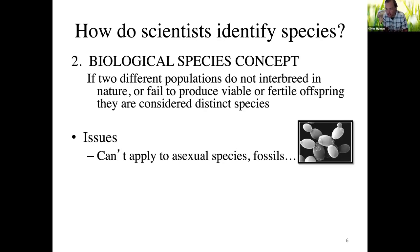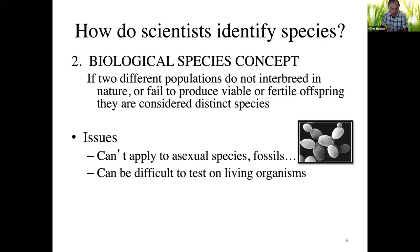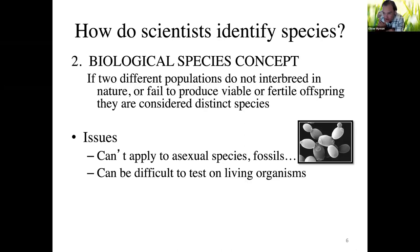The biological species concept also doesn't work for extinct or fossilized species. How do you determine if a Velociraptor is different from a Brontosaurus if you can't get them to breed because they no longer exist? It can also be very difficult to test on living organisms — there are an estimated 1.8 million described species and 10 million total, and we can't get every single one together to see whether they'll breed.